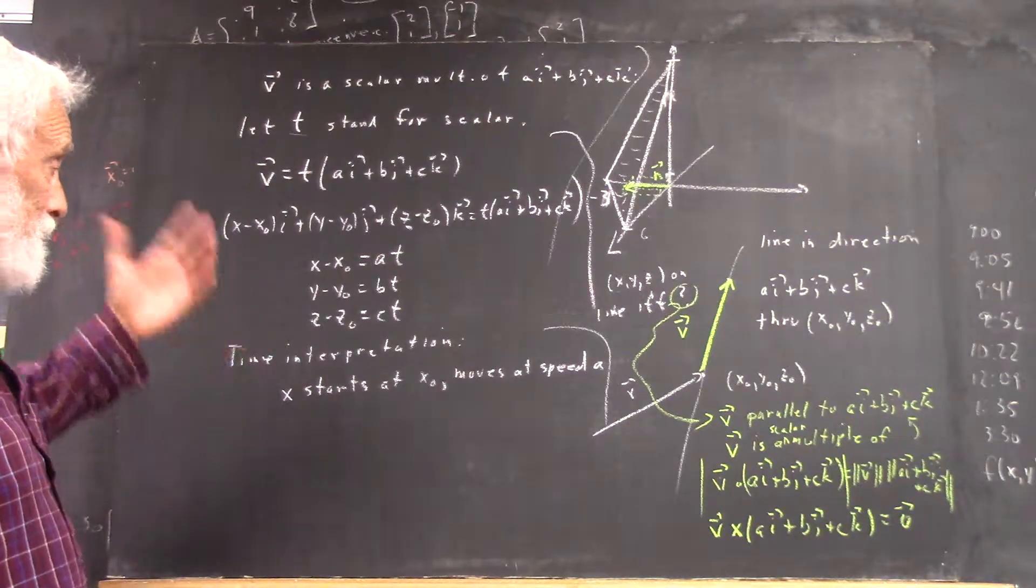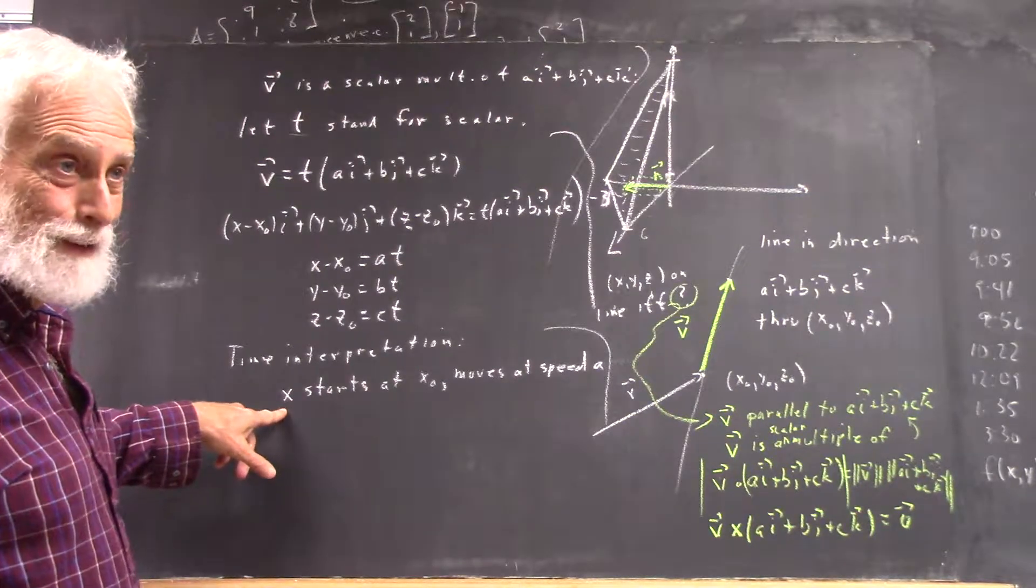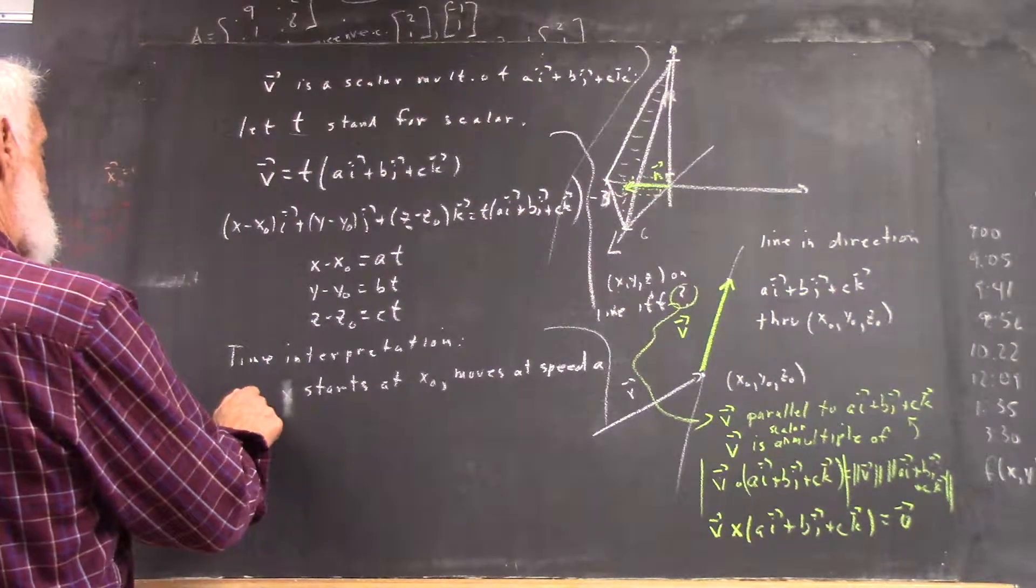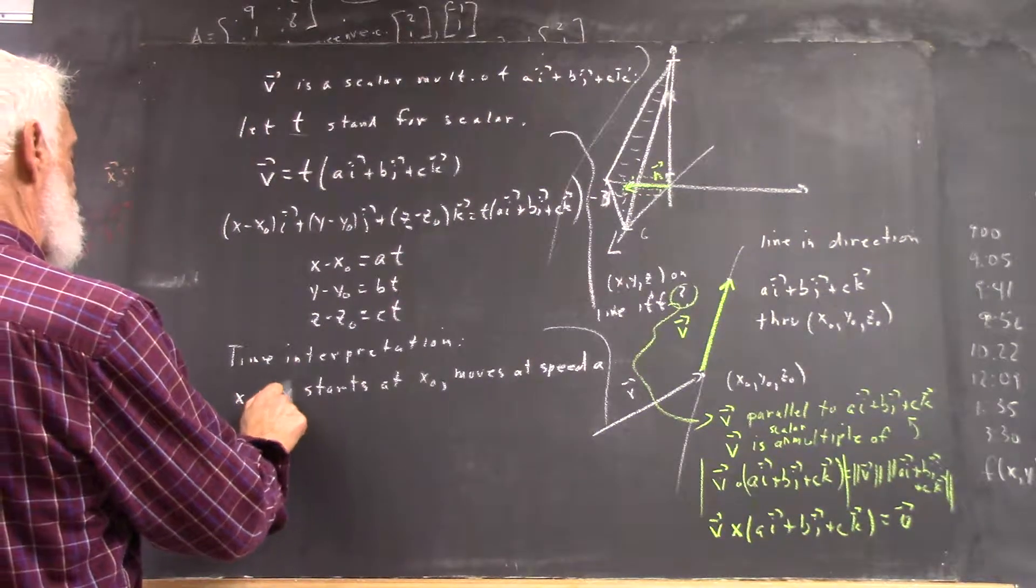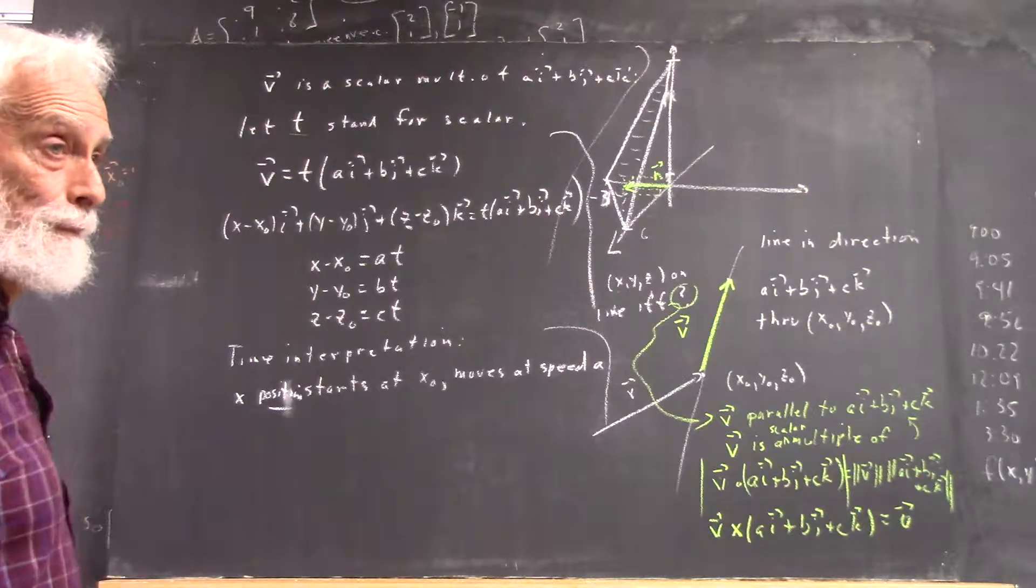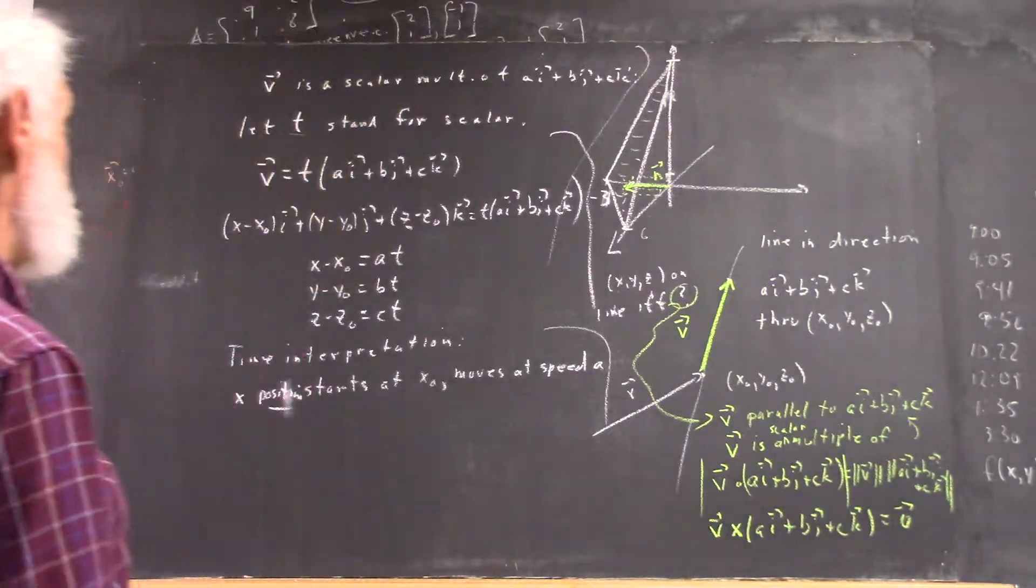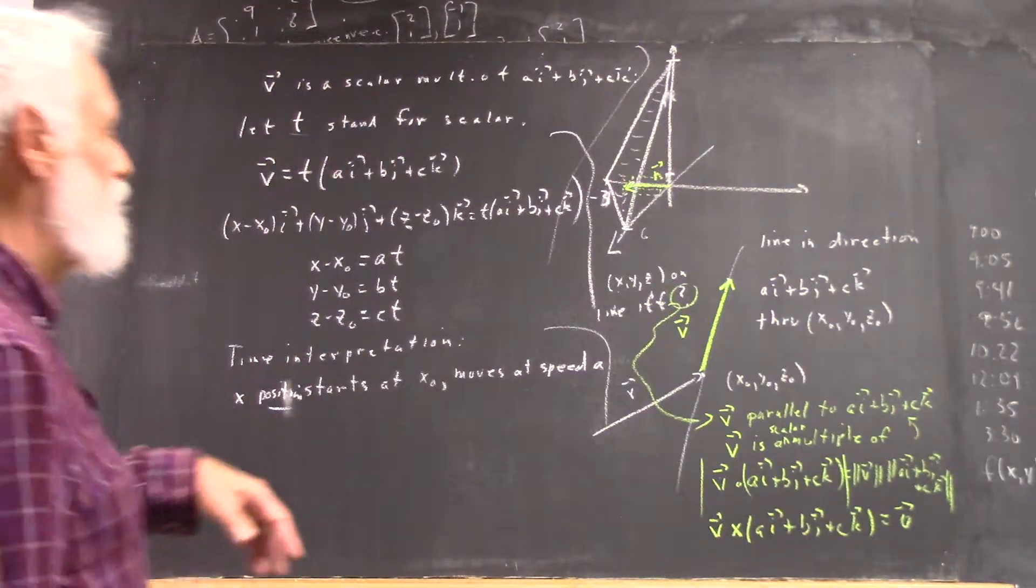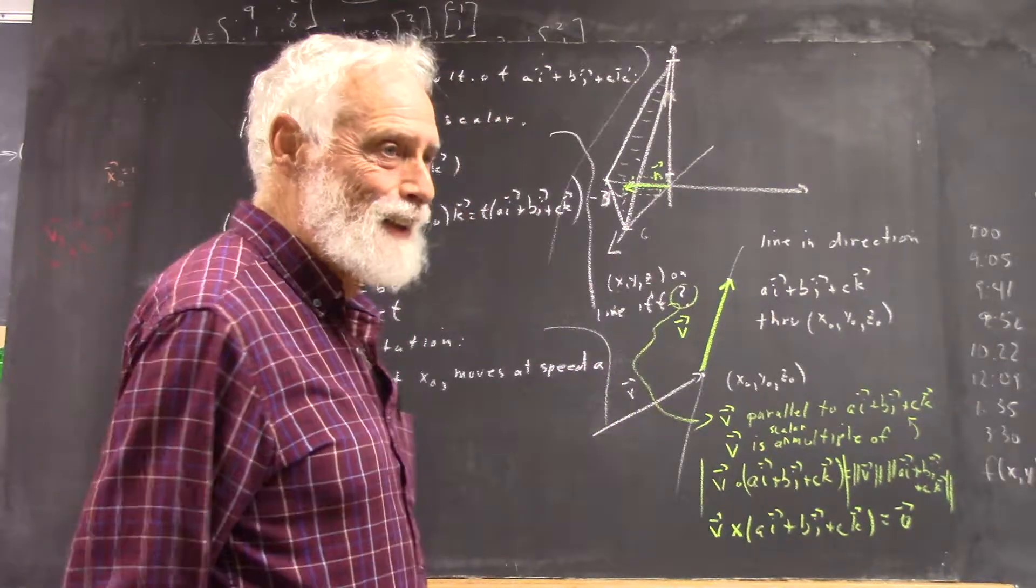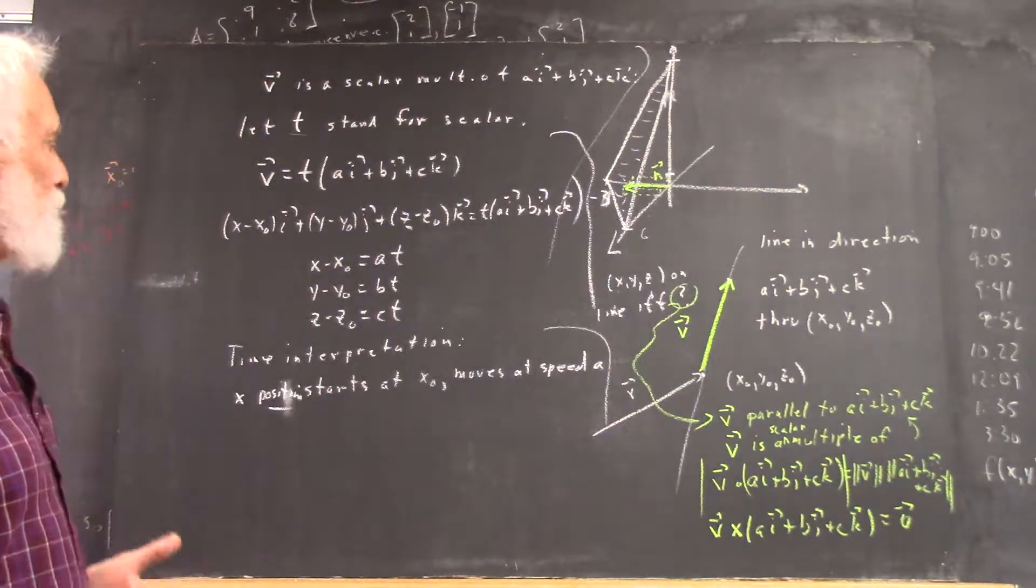Now that's really, I'm mixing types. X doesn't move, x is the x-coordinate, right? So we could say the x position. Make sense? Starts here and moves at speed a, actually changes at rate a. So I'm being a little loose with the language, but that goes along with digressions. I don't want to digress down to the set theory that underlies language.